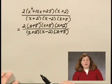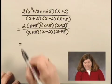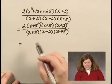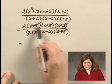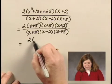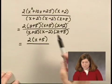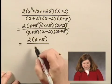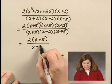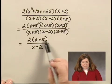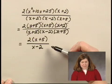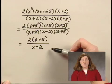There are no other factors common, so I write as my final answer the factors that are left in the numerator, 2 times x plus 5, over the one factor left in the denominator, and that is x minus 2. There's no reason to multiply out the numerator. This is the simplified form of the expression.